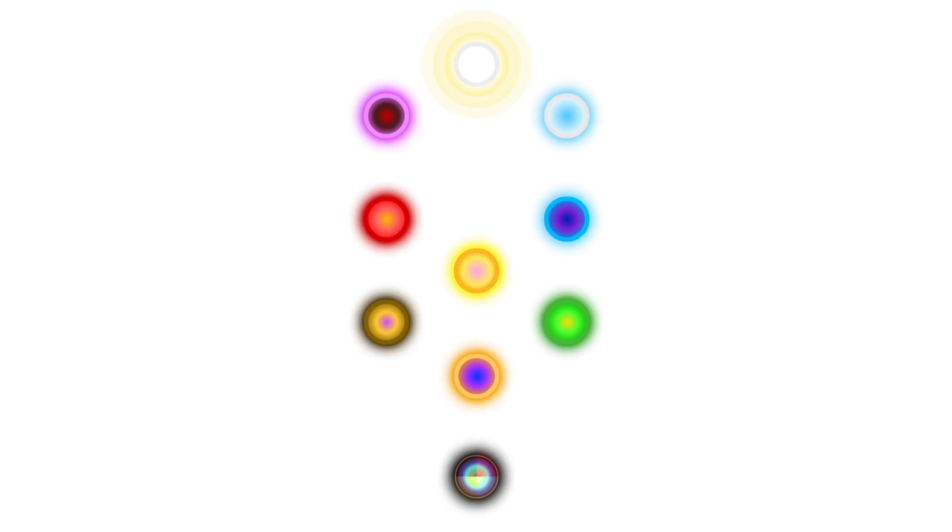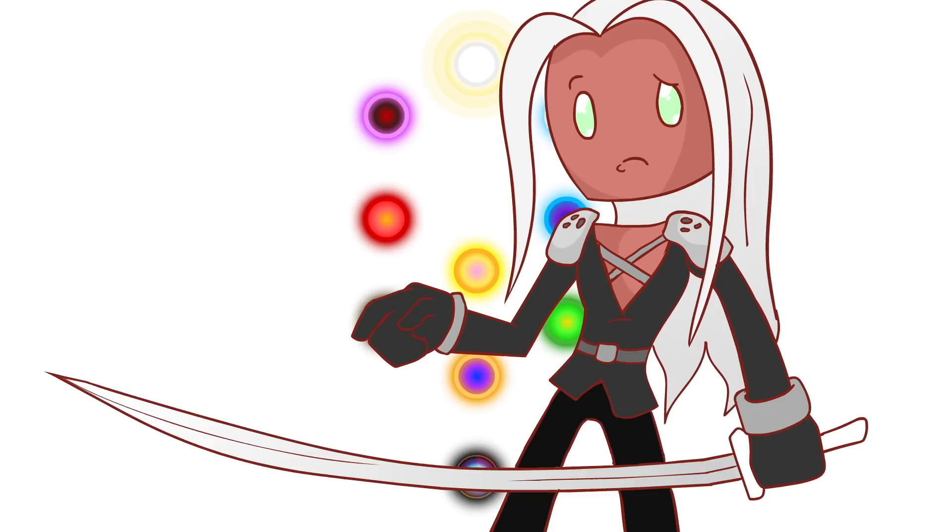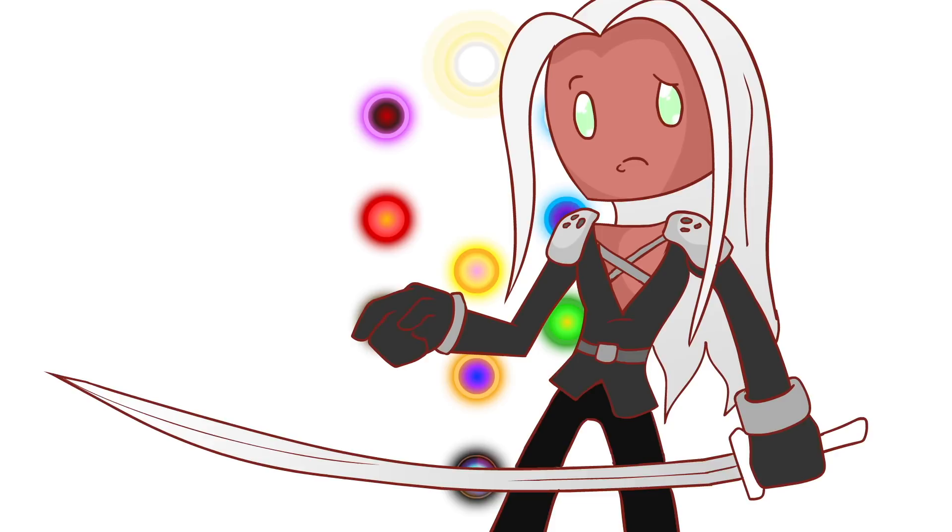The Tree of Life in its simplest sense is made up of 10 spheres and 22 interconnecting pathways. These are often added together and described as the 32 paths of the Tree of Life. The 10 spheres are actually called Sephiroth. No, not that Sephiroth.